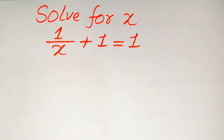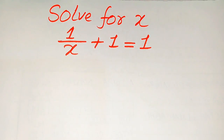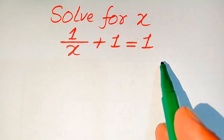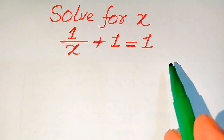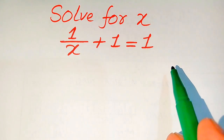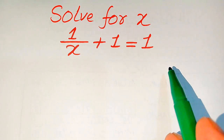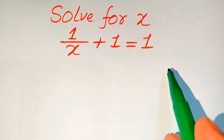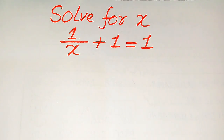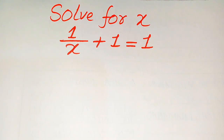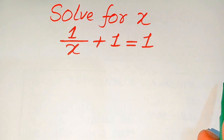Hello everyone. How to solve this problem for the values of x if we have 1 over x plus 1 equals 1, and we solve this problem for all the values of x. First, we find all the roots of this equation, and at the end we verify which of the roots satisfy the given question statement, which are extraneous roots, and which are the solution. At the end I will explain the difference between solution and extraneous root.